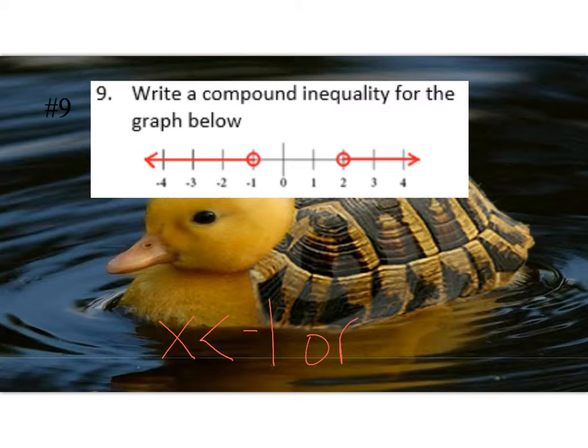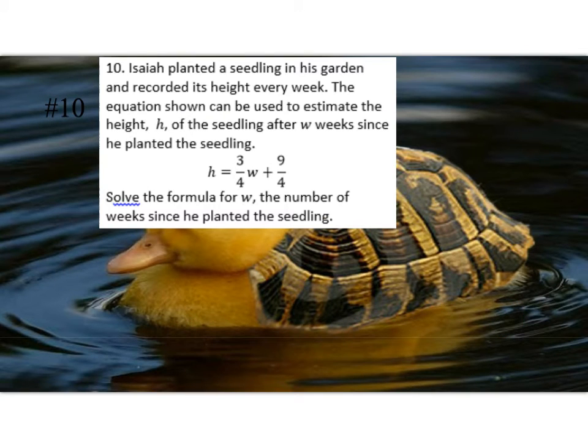So this side is x less than negative one. Open circle means we would not put an equal sign underneath it. Or - and no number can be both less than negative one and on the right side. So x is less than negative one, or x is greater than two, since it's pointing to the right. That's our answer.